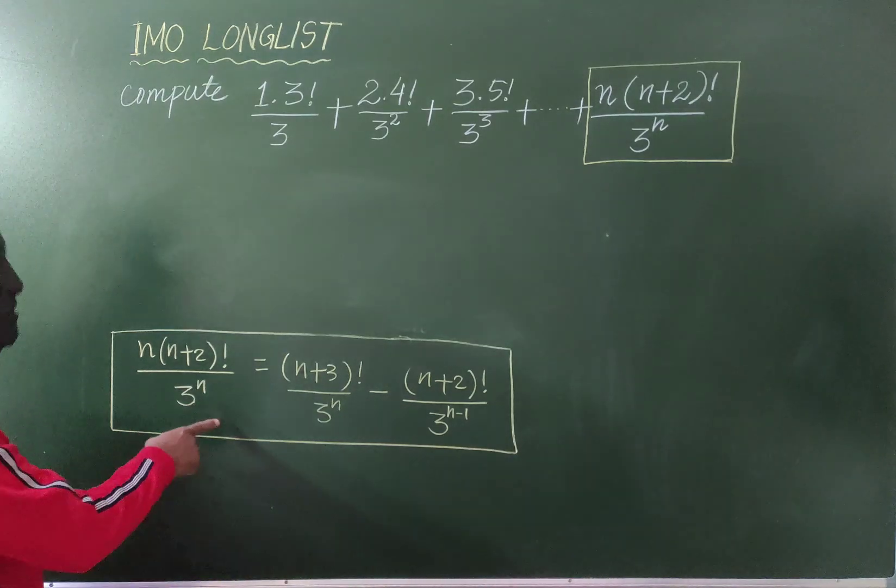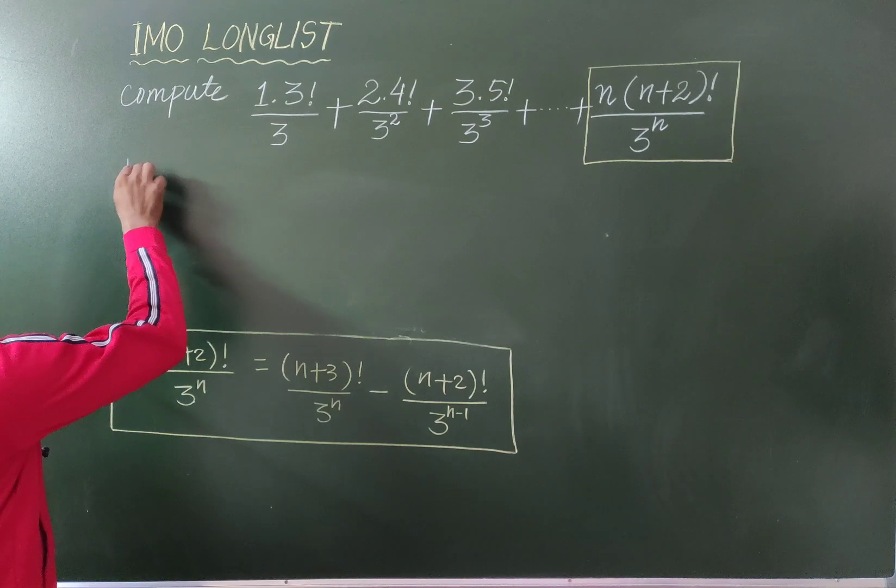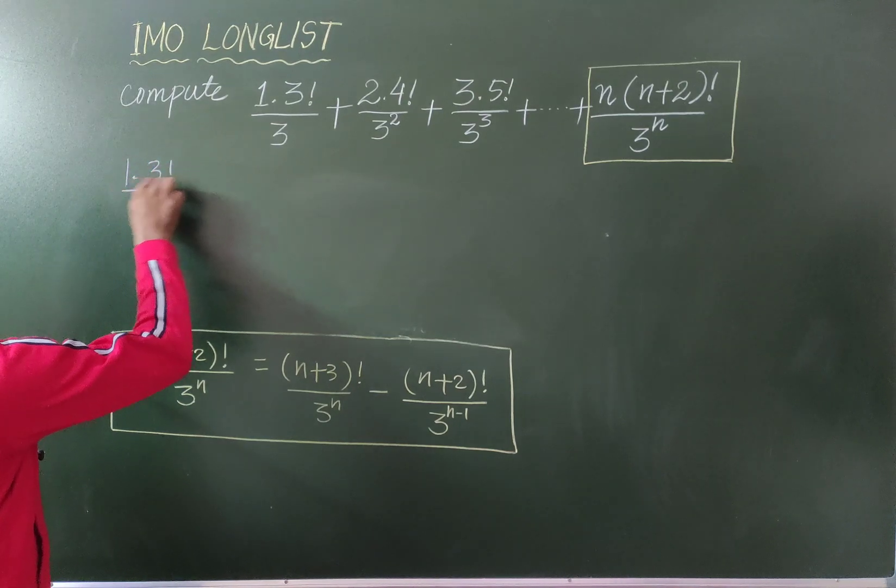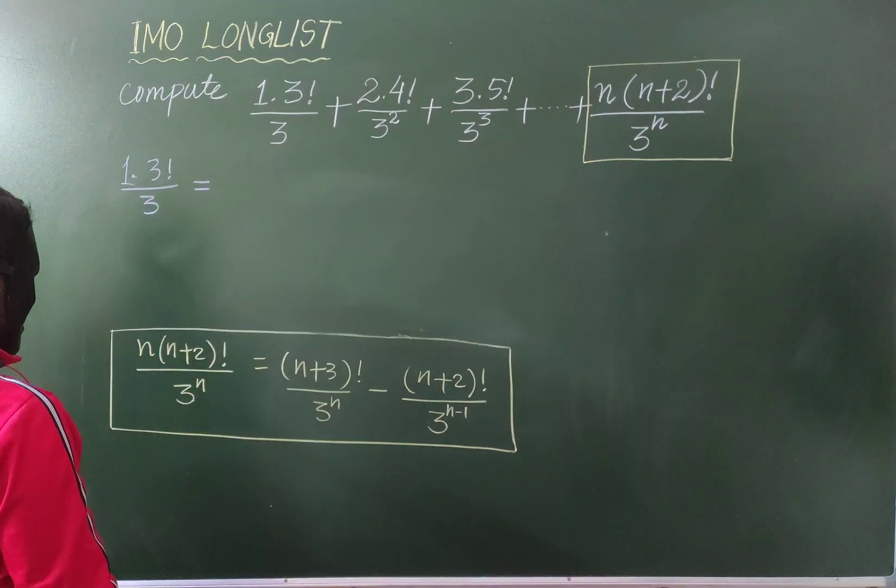In this way, you can take a formula here. So, now, 1 into 3 factorial by 3 will become, yes, 4 factorial by 3 minus n plus 2.